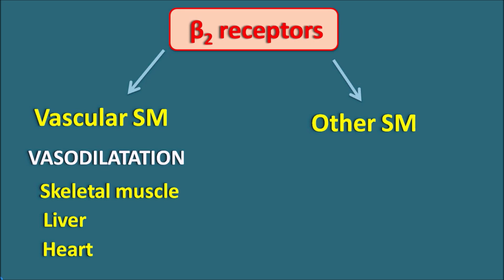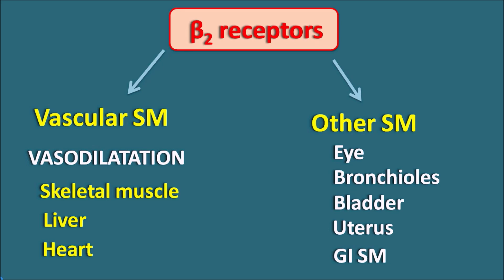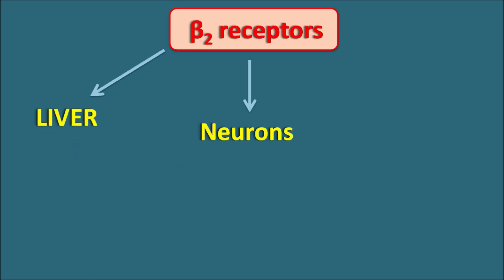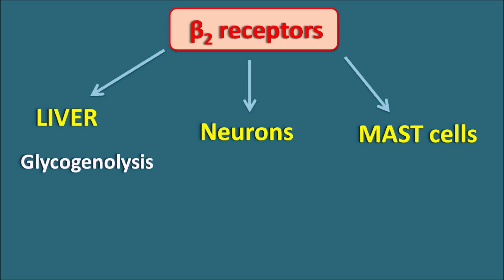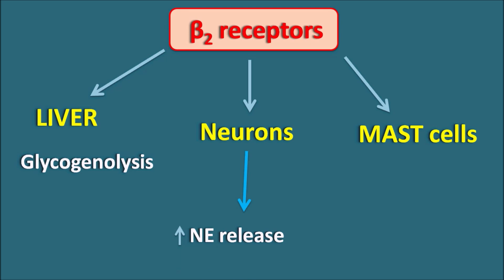The action of beta-2 receptors on other smooth muscles — such as the eye, bronchioles, bladder, uterus, and gastrointestinal smooth muscle — is relaxation in all of these smooth muscles. Apart from smooth muscles, beta-2 receptors are also present on the liver, neurons, and muscles. Just like alpha-1 receptors, beta-2 receptors can increase glycogenolysis within the liver. On neurons, they can produce excitation and increase the release of mediators like norepinephrine. That is why beta-2 receptors are auto-stimulatory in nature — quite opposite to the alpha-2 receptors. Alpha-2 receptors are auto-inhibitory, whereas beta-2 receptors are auto-stimulatory.